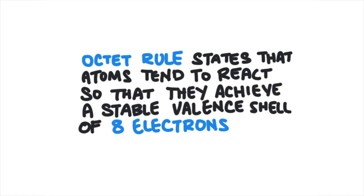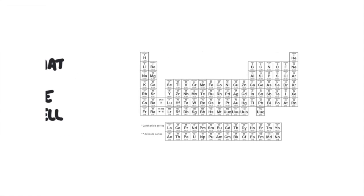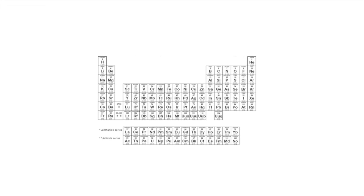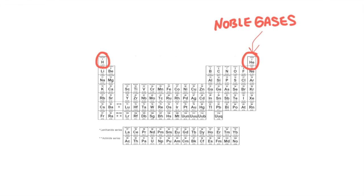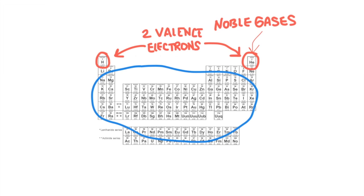Elements are not stable unless they have a filled valence shell of electrons — that is the outermost energy level. This is called the octet rule. The noble gases are the only elements that are already stable, and they do not react with other elements. These are the noble gases, here in group 8. They all have complete valence shells of electrons. In general, elements want to have 8 electrons in their valence shell. There are a couple exceptions, like hydrogen and helium — they only need 2 electrons in their valence shell to be stable.